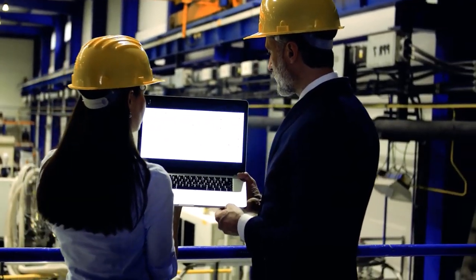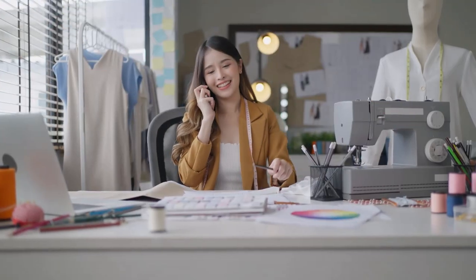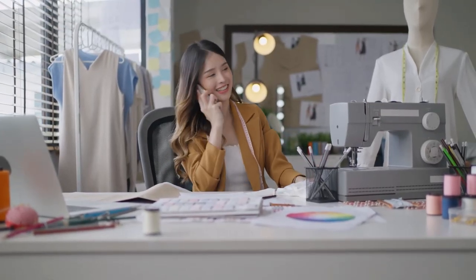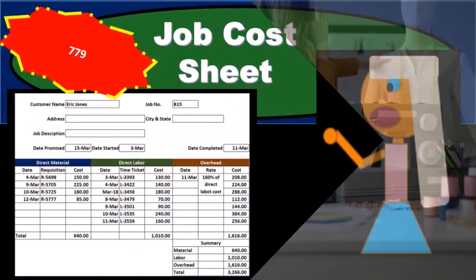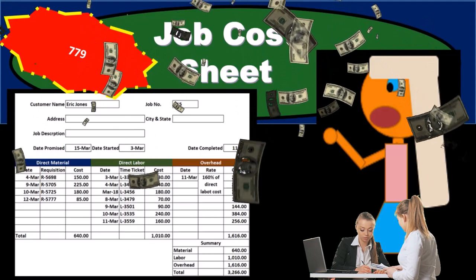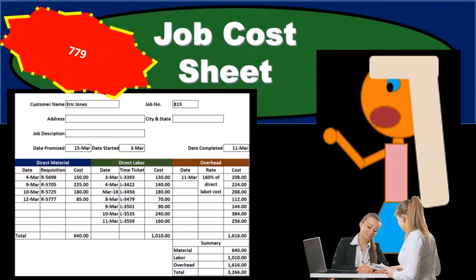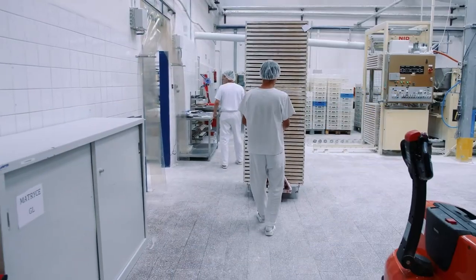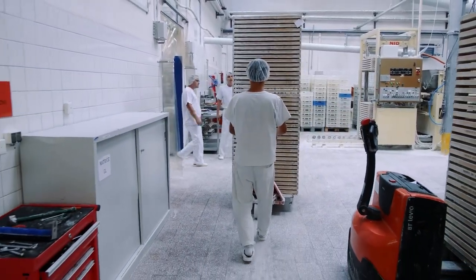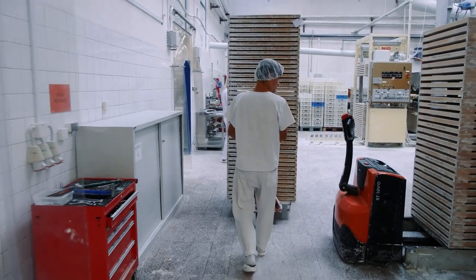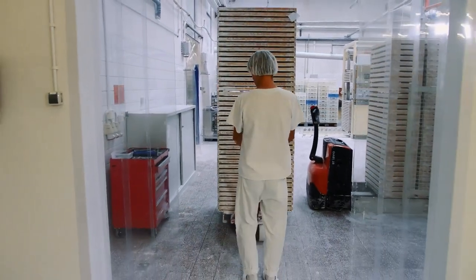If we make something custom — customized guitars, for example — if we produce inventory, we're going to need to be able to track the costs to a particular job. The manufacturing company scenario is the one we typically work with because it needs to track costs to each job and has the added complication of dealing with materials.